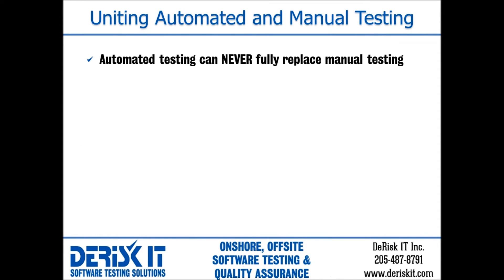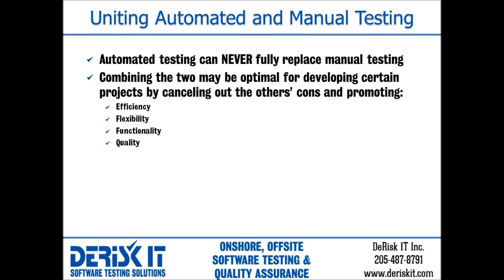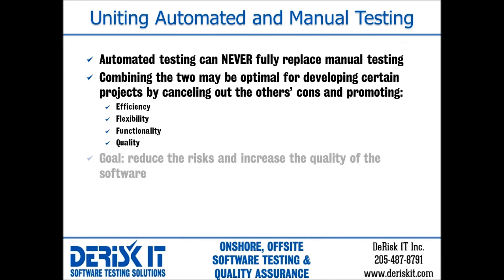One fact should be clear: automated testing can never fully replace manual testing — it can only be a supplement. There will always be a need for manual testing, especially if software is constantly developed or modified. Uniting the two may be optimal for certain projects by canceling out each other's cons and promoting efficiency, flexibility, functionality, and quality. By using an automated tool to quickly execute a well-covered test suite for a relatively stable part of the software, a greater amount of efficient software testing can be accomplished, increasing quality and limiting the risks in releasing the software.